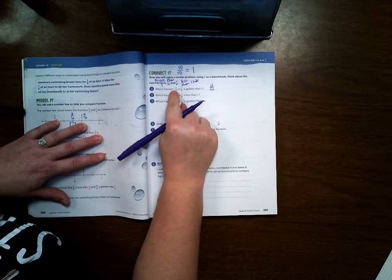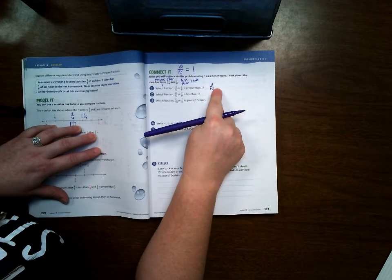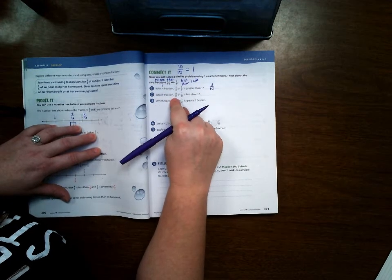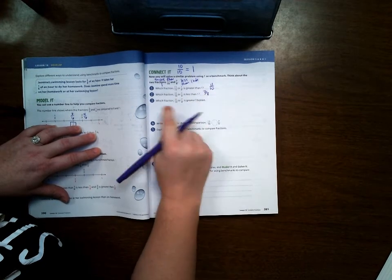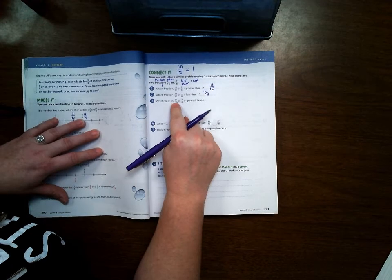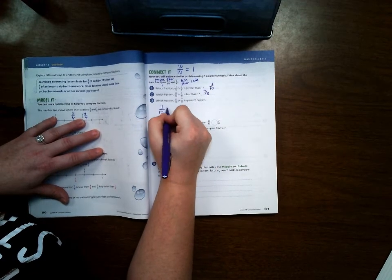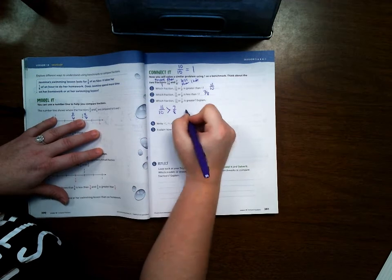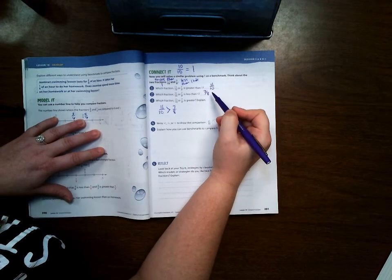And it says, which fraction, eleven-tenths or seven-eighths, is greater than one? Well, it's eleven-tenths. Which fraction is less than one? Well, it's seven-eighths. Which fraction is greater? Eleven-tenths is greater than seven-eighths. And it's because eleven-tenths is more than 1 whole and seven-eighths is less than 1 whole.